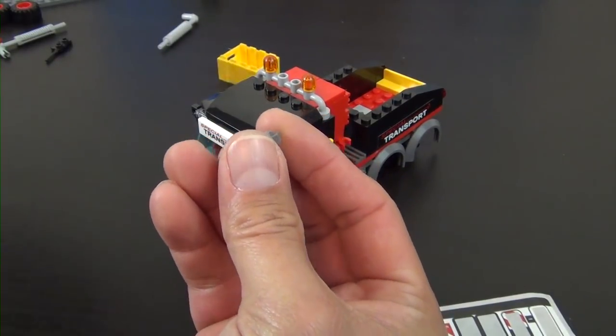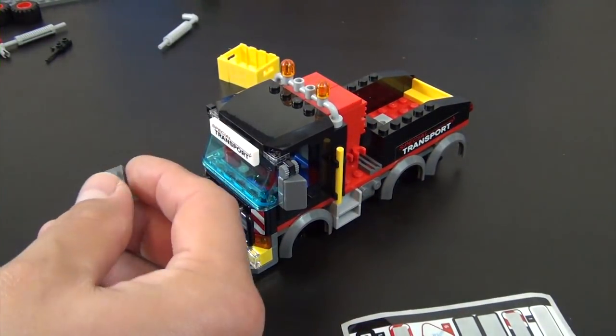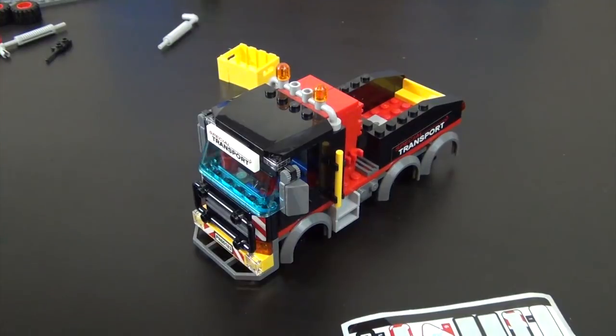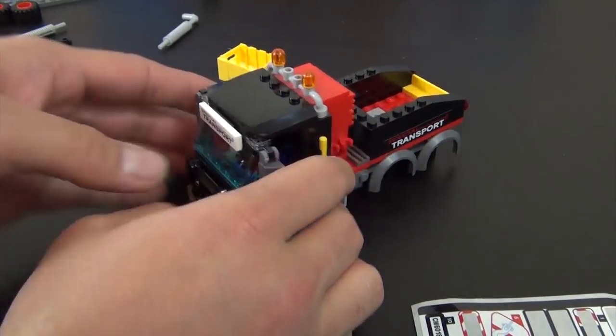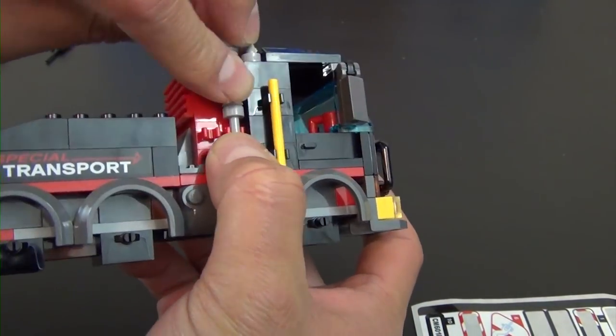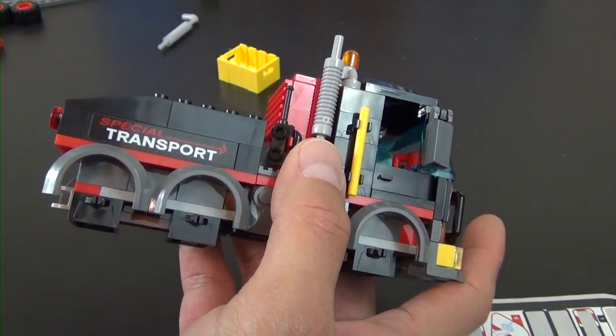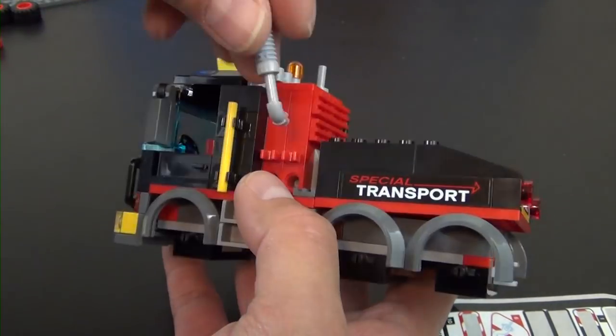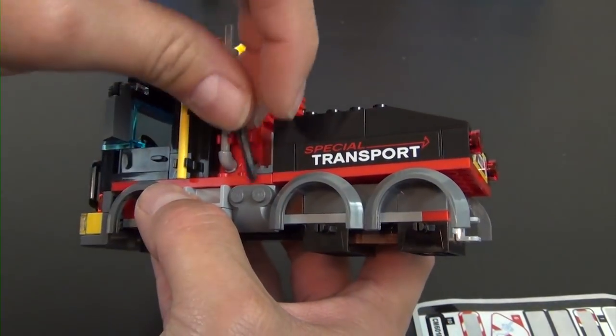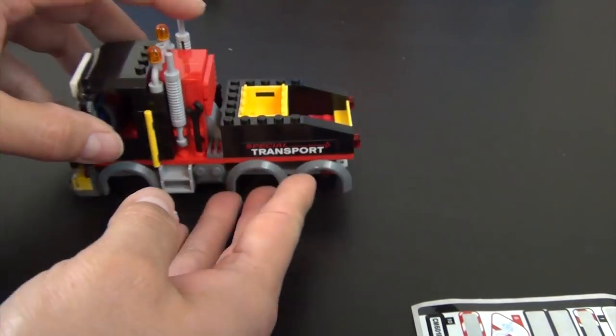Now we're going to do the rear view mirror pieces. Turn this around. We have a smokestack part. That'll go there. Walkie talkie accessory here. Turn it back around. We have another smokestack piece. And a wrench. We have a yellow crate. Simply attach in there.